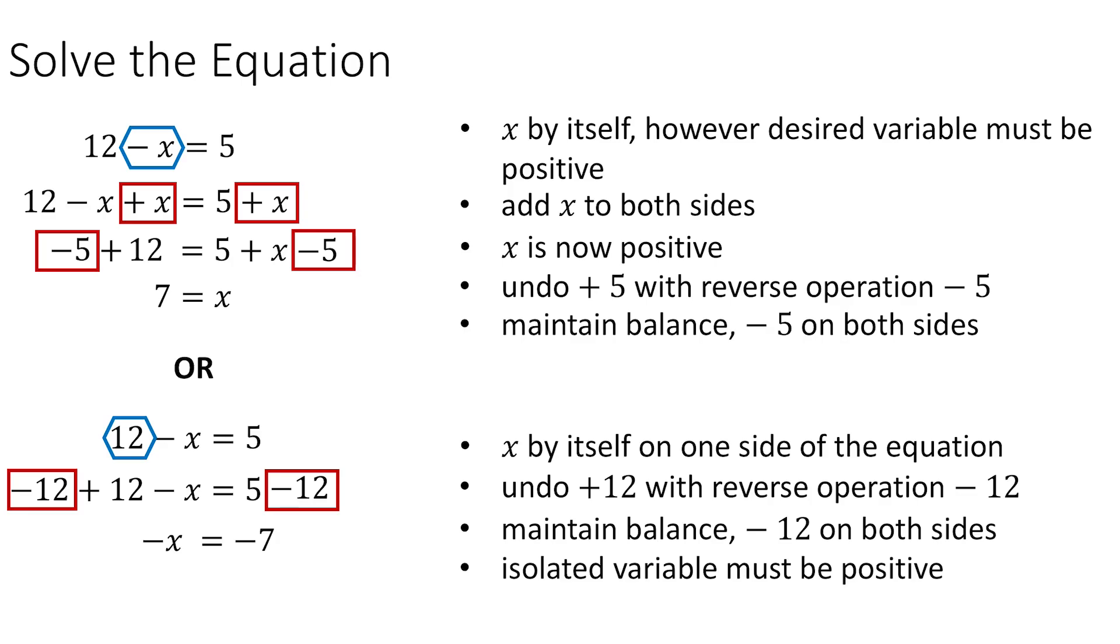And at this point, we basically need to drop the negative signs because both quantities on the left and the right are negative. Technically, what we'll do here is either multiply both sides by a negative 1 or divide both sides by a negative 1. When we do this, we get x is equal to 7, and it's the exact same solution.